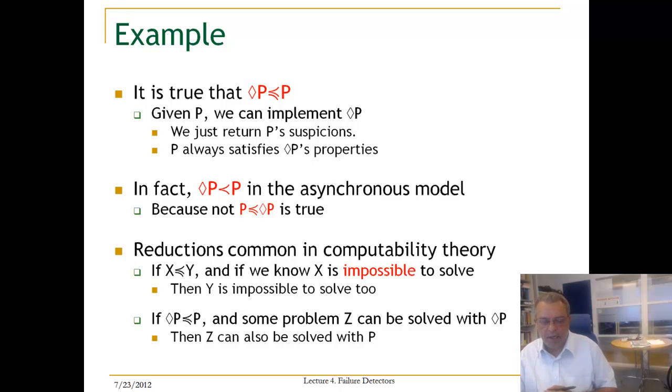So let us now relate reducibility to our different kind of failure detectors. So we know that if we have P we can implement Diamond P, eventually perfect failure detector, because P always satisfies Diamond P's property. In fact, P is the stronger abstraction than Diamond P. We know in asynchronous systems we cannot use Diamond P to implement P.